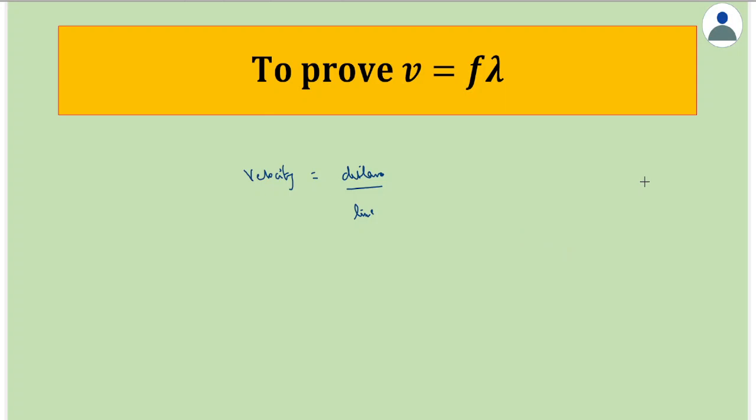Now let's assume there is a point called point P, and a wave is moving toward point P. Let's assume that in some time, one wave crosses point P. The wave starts from here, and after some time, this wave crosses point P.